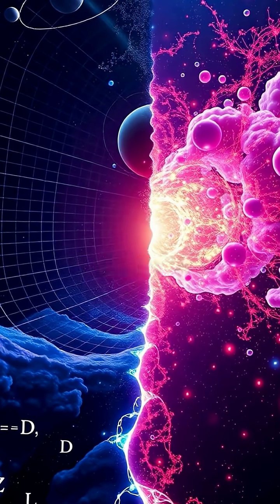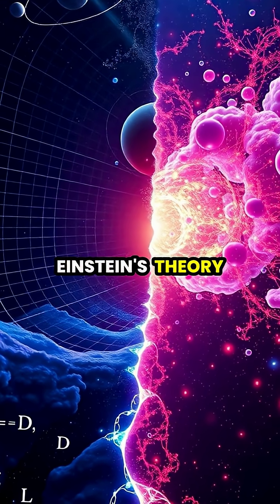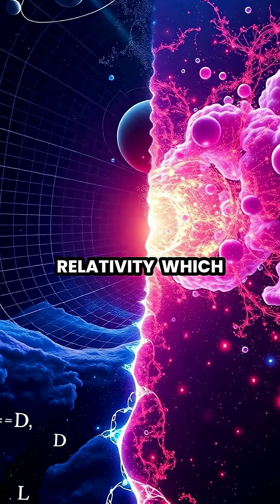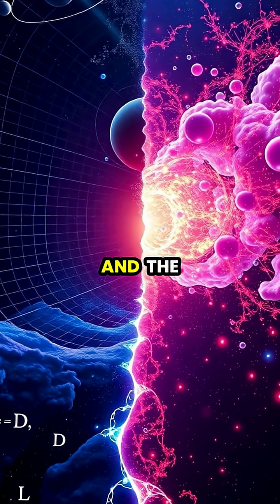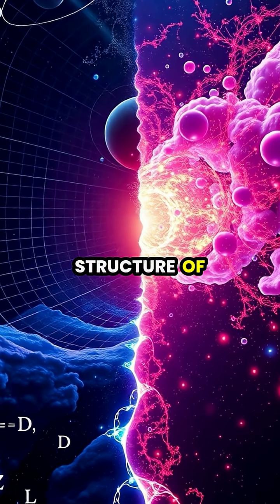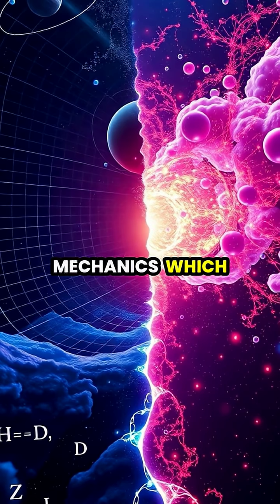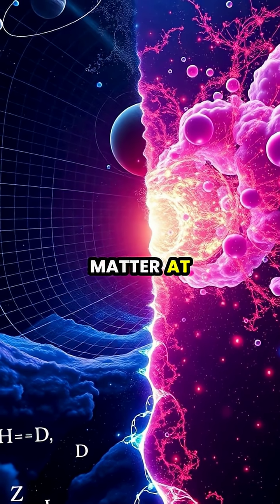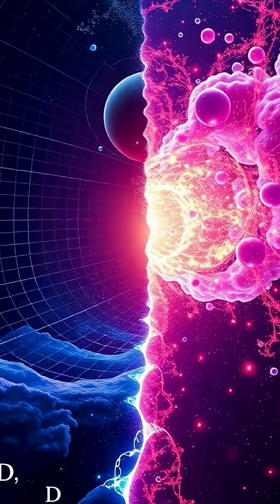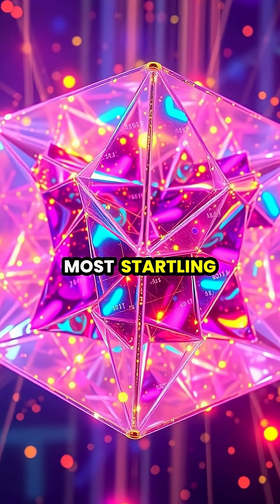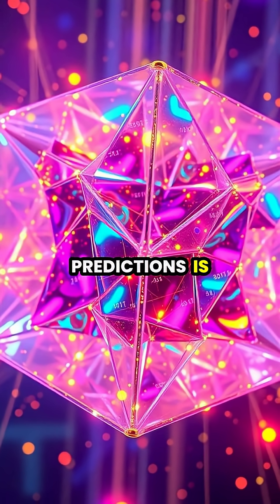String theory emerged from the need to reconcile Einstein's theory of general relativity, which describes gravity and the large-scale structure of the universe, with quantum mechanics, which governs the behavior of matter at subatomic scales.